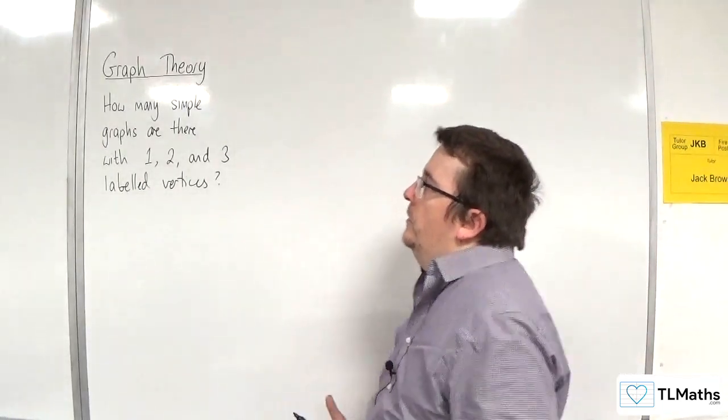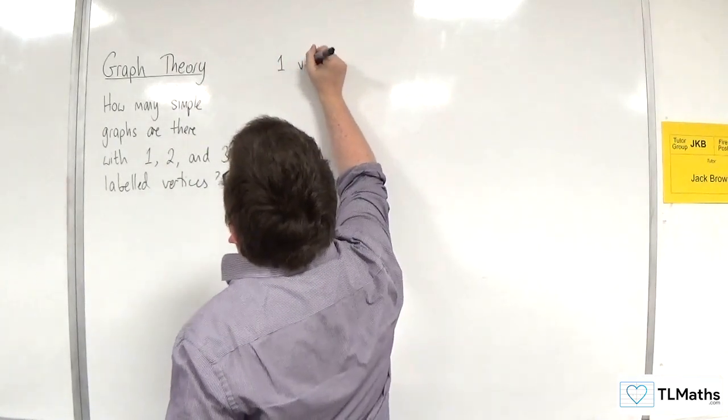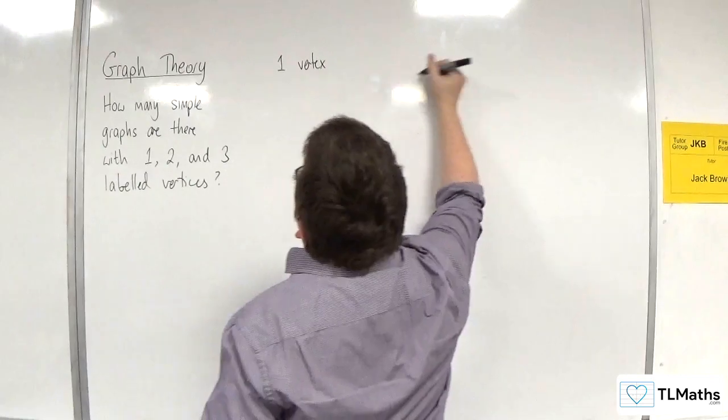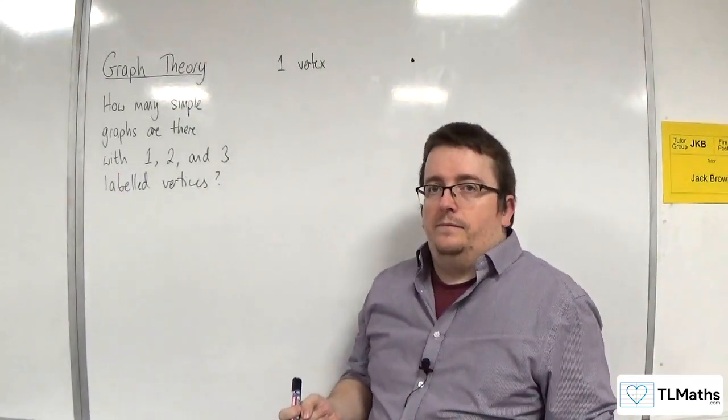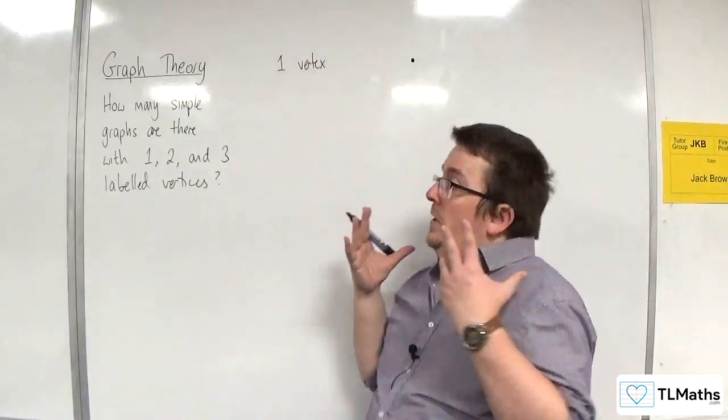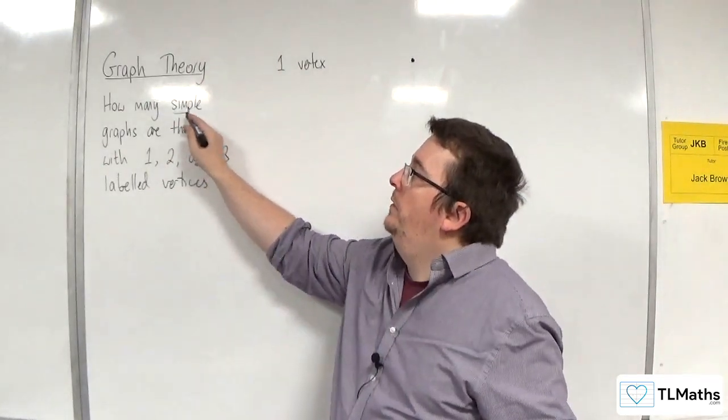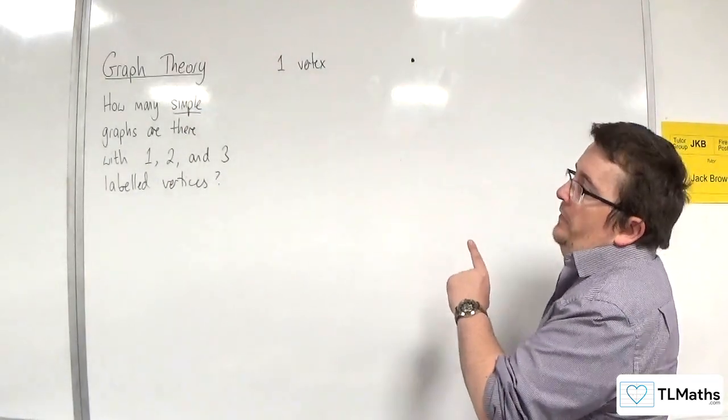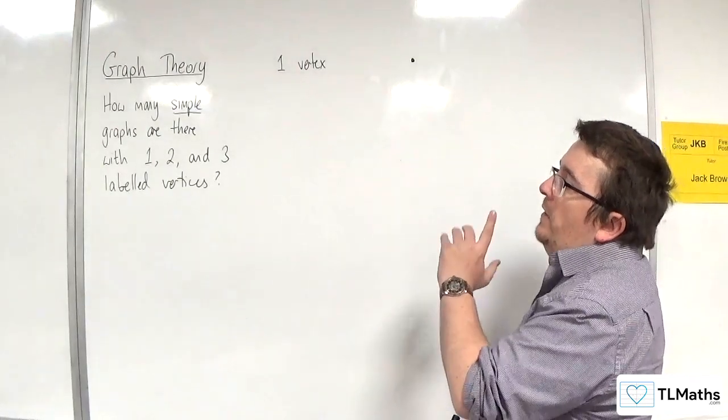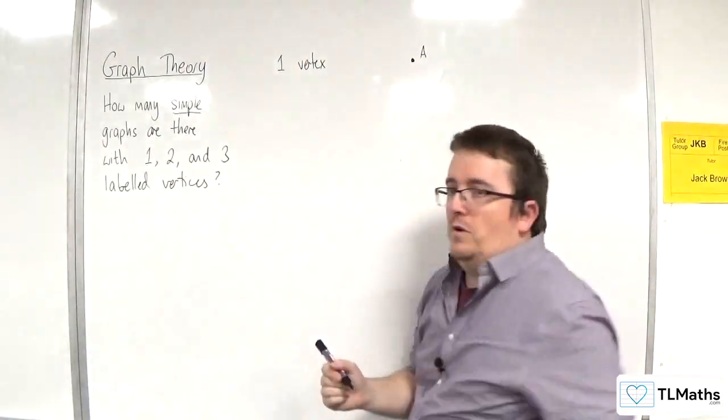But let's take a look at this. So if there is just one vertex, then there we are. That's it. Now we can't have any loops because the graph is simple. So that's all we can do with one vertex. Now, if you want to think of them just as labeled, there's A, right? That could represent A.